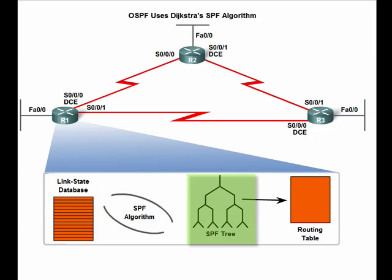The SPF tree is then used to populate the IP routing table with the best paths to each network. I hope this brief overview of OSPF will give you a good starting place for the chapter. OSPF has many properties and configurable parameters that you will study and practice. Congratulations on your progress and good luck as you end the course.